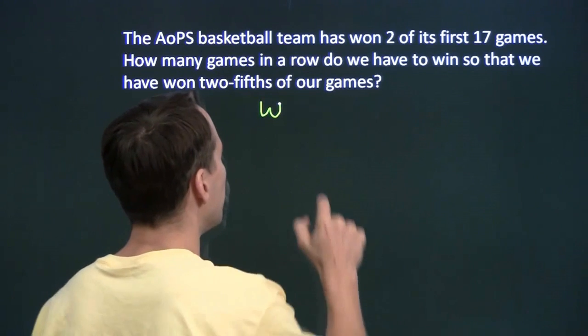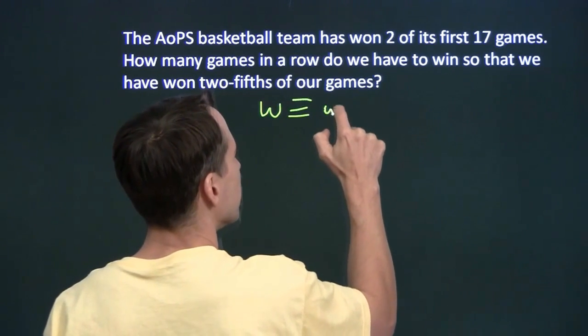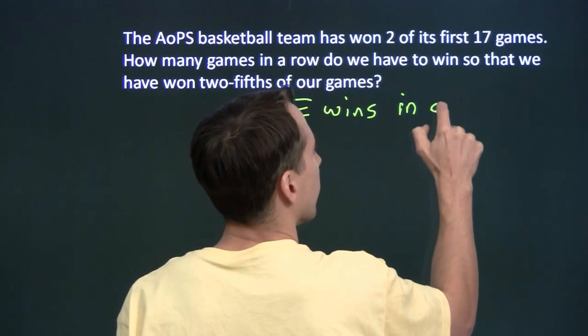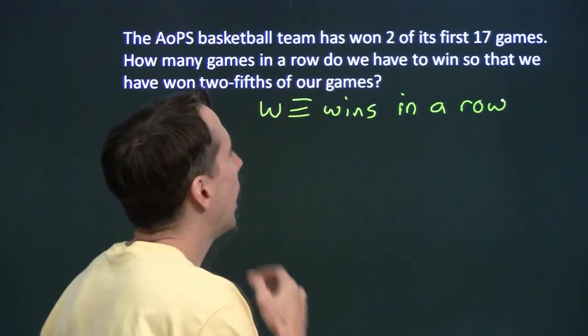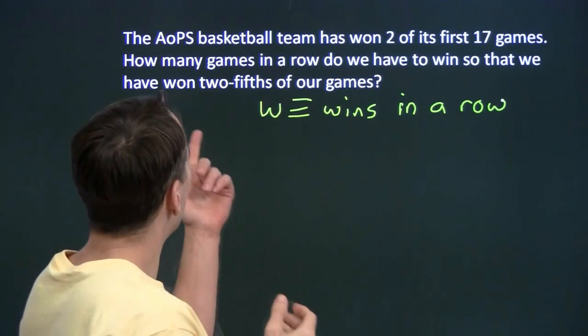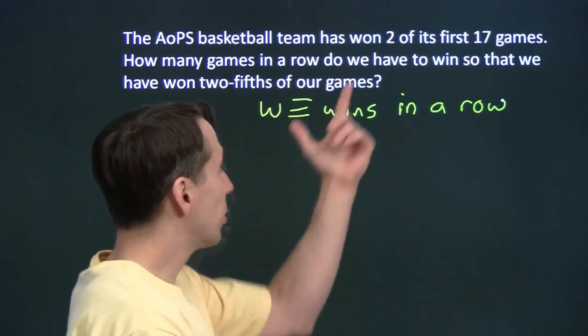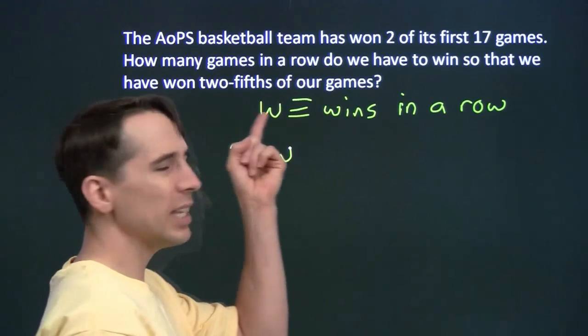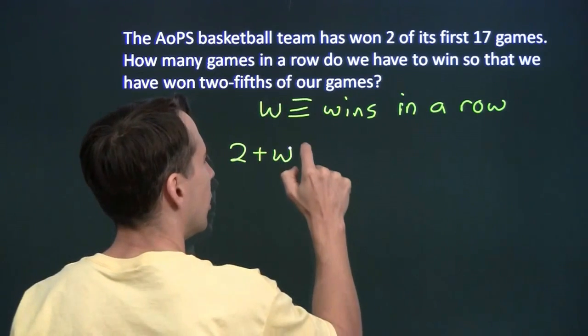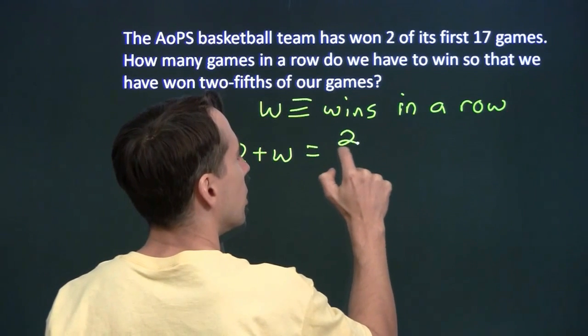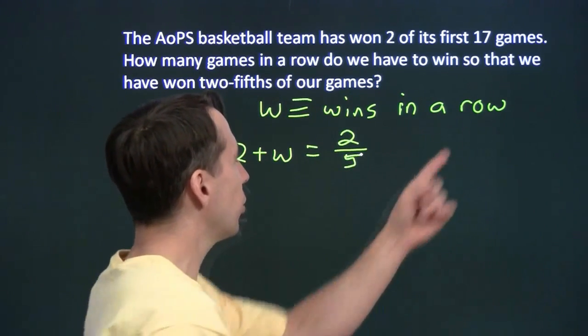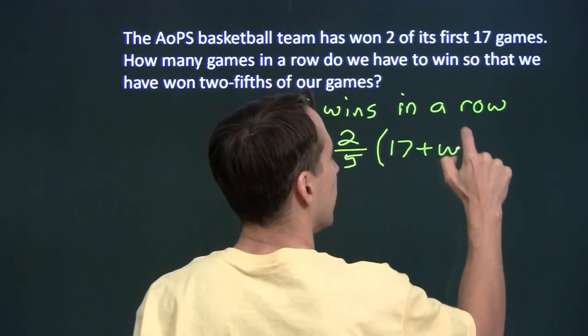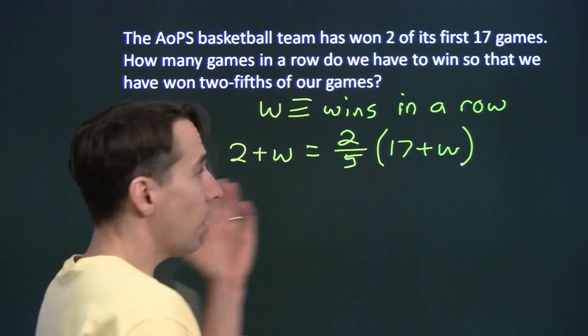So here, we'll let w be our variable for wins in a row. And we need to figure out how many we'll win in a row. Now, if we just start winning a bunch of games in a row, we win w in a row, we'll have won two plus w games total. And we want that to be two-fifths of the total. So we want this to be two-fifths of the total. The total will be 17 plus all these games that we're winning in a row. So there's our equation.